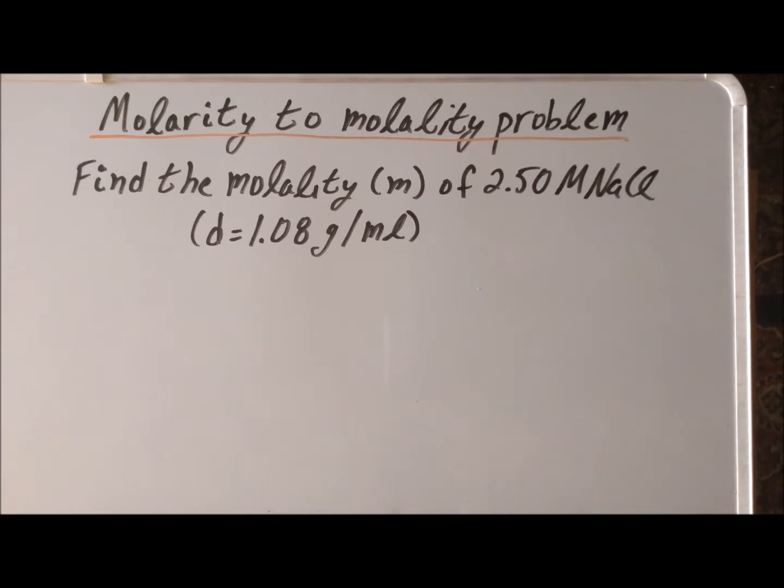The specific case is we have a 2.50 molar solution of sodium chloride, and in the problem we are given a crucial piece of information: the density of the solution, which is 1.08 grams per milliliter.